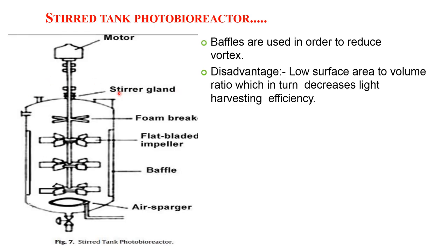Next is the stirred tank photobioreactor. In this photobioreactor, baffles are used in order to reduce vortexing. The disadvantage of the stirred tank photobioreactor is the low surface area to volume ratio, which in turn decreases the light harvesting efficiency of the algal biomass.